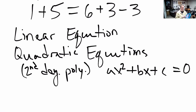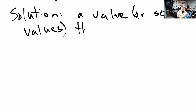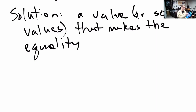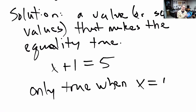When we find a solution for an equation, what we're finding is a value or a set of values that makes the equality true. For example, I can write x plus 1 equals 5, and that is not always true — this is only true when x equals 4. It's not true for any other value of x.